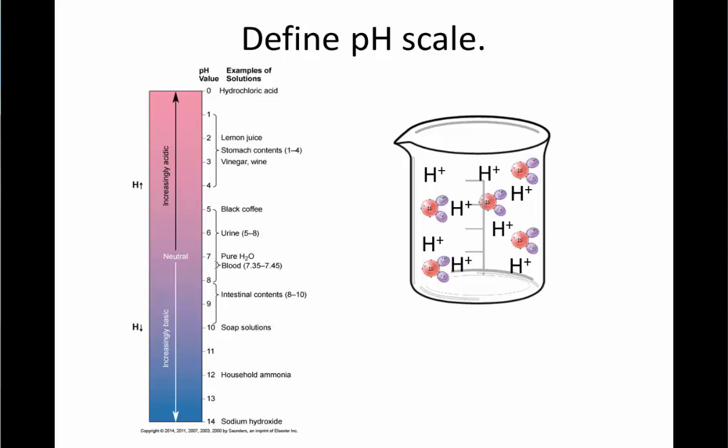As we have more free hydrogen ions within a solution, we have an increasingly acidic solution. Related to the pure H2O, the pure water, we can see that urine has an acidity of somewhere between 5 and 8 on the pH scale. Coffee is slightly more acidic than that at about a pH of 5. Moving up to lemon juice, stomach contents, vinegar, and so on, we have increasingly acidic solutions.